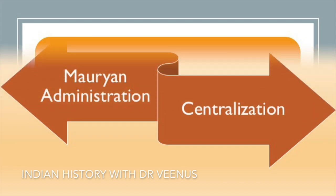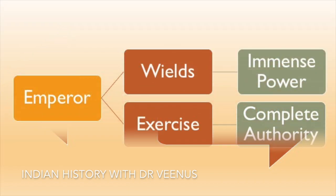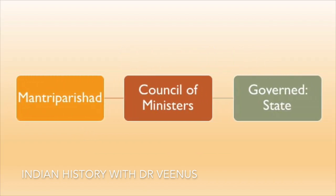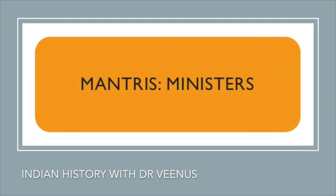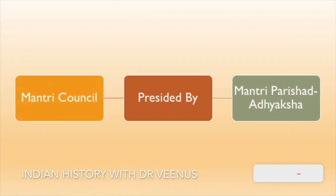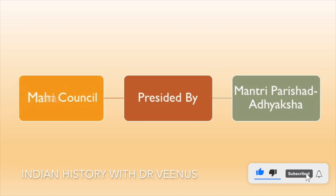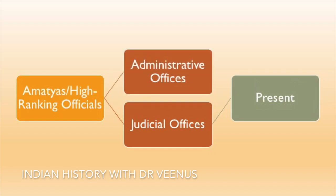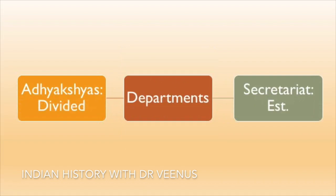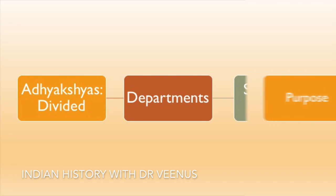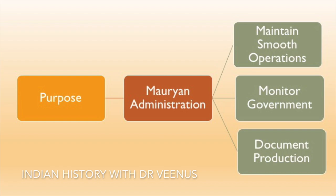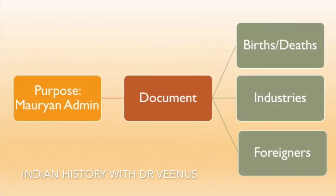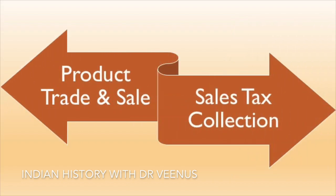The Mauryan administration was notable for its centralisation, beginning with the emperor wielding immense power and exercising complete authority. The mantri Parishad, or council of ministers, governed the state, and the ministers were called mantris. This mantri council was presided over by the mantri Parishad Adhyaksh. Mahamatras are honorary titles granted to some of the country's most powerful leaders. Amatyas, or high-ranking officials in administrative and judicial offices, were also present. The Adhyakshas were divided into departments with a secretariat established. To maintain smooth operations, the government monitored and documented production, births and deaths, industries, foreigners, product trade and sale, and sales tax collection.